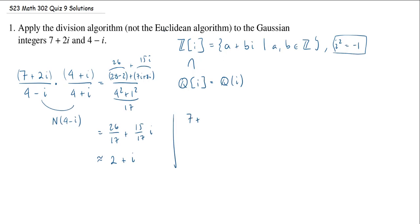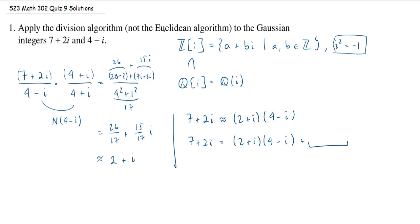Putting this together, 7 plus 2i would be approximately equal to 2 plus i times 4 minus i. It's not a direct equality, but we can turn it into one by adding a remainder term. If I distribute, I get 2 times 4 is 8, i times minus i is minus i squared which is plus 1, then negative 2i and positive 4i gives 2i. So this is 9 plus 2i. But I want 7 plus 2i, so I need to subtract 2. The 2i terms are already fine, so my remainder is simply minus 2.